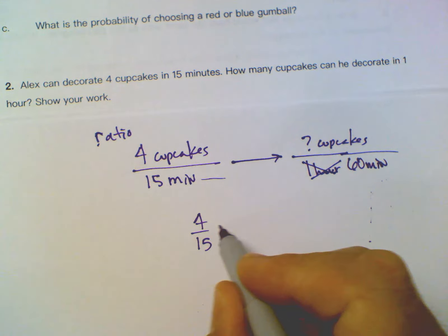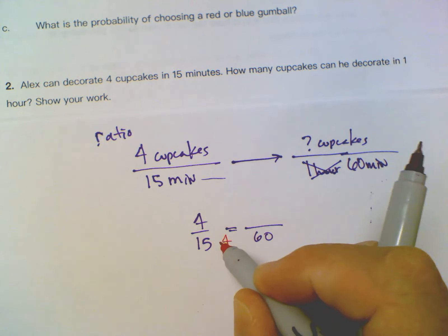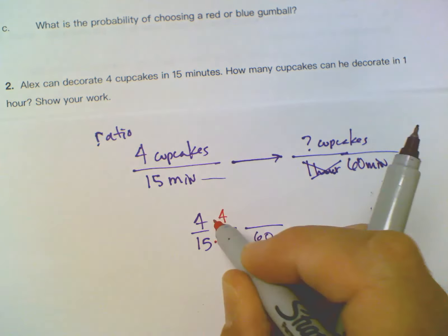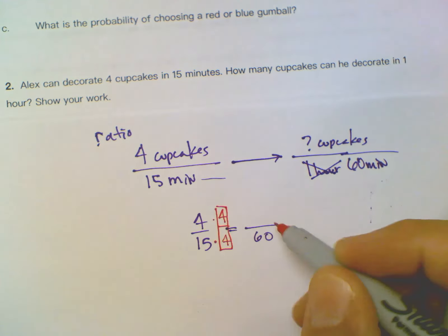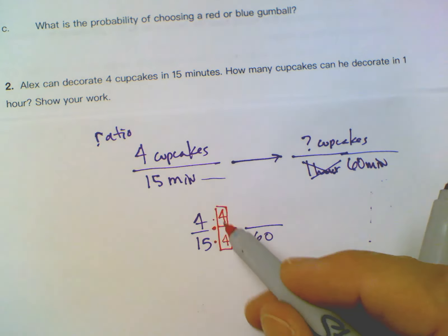...in one hour. Well, I could write one hour here, but the issue is now I don't have the same units. I have to have the same units for me to do this correctly. So instead of one hour, I'm going to write it as 60 minutes, right? Because it is already in minutes, so I want to have minutes in my ratio over here.